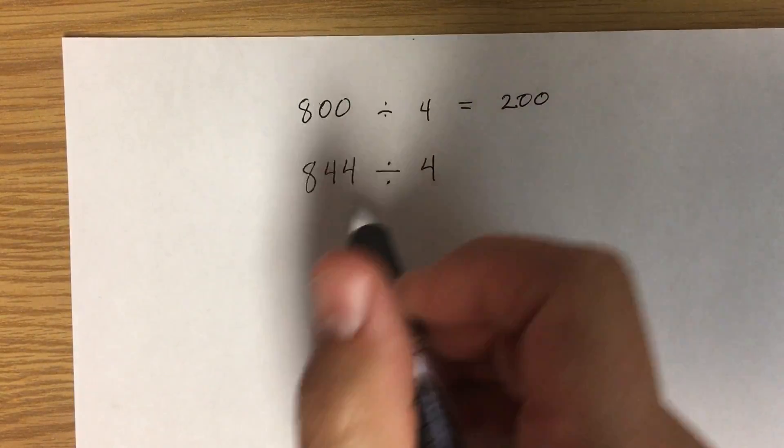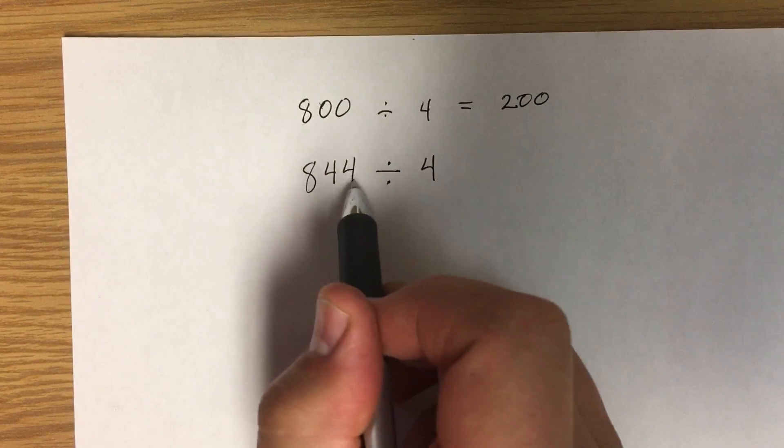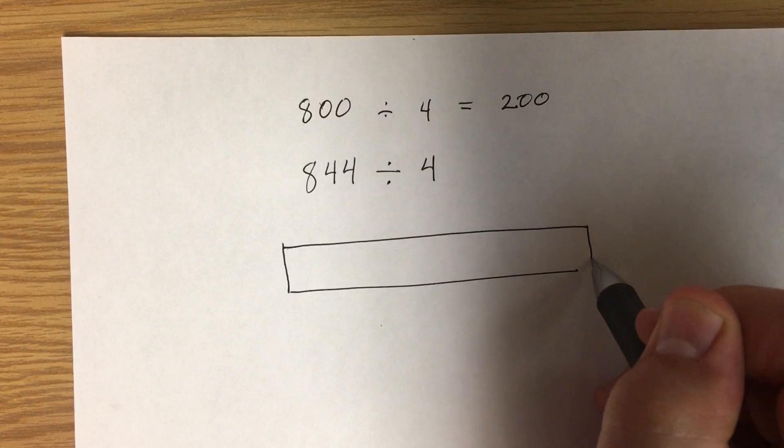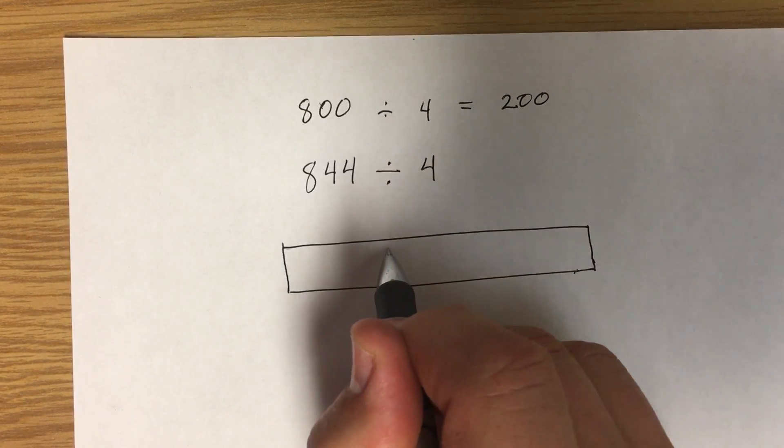All right, now using the box method, I have three digits. So I'm going to make a box with three compartments, one for each place value.